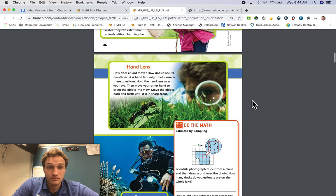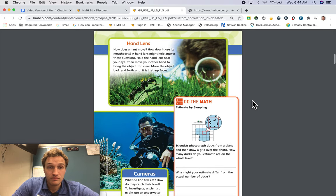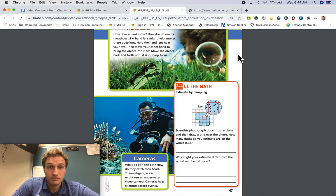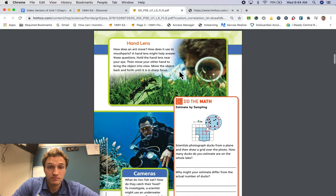Hand lens. How does an ant move? How does it use its mouth parts? A hand lens might help answer these questions. Hold the hand lens near your eye. Then move your other hand to bring the object into view. Move the object back and forth until it is in sharp focus.